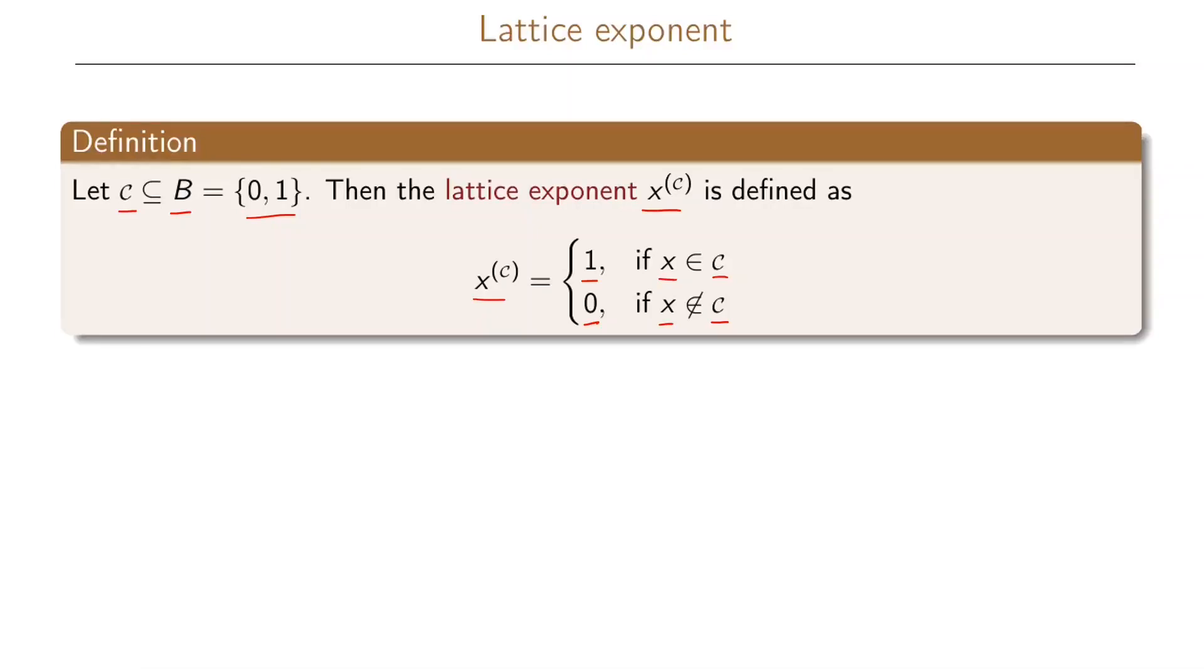In other words, if we have the lattice exponent x^{1} here, this will always be equal to the value of x, because if x is 0, 0 will not be in this set which consists of 1, but if x is 1, 1 will be in this set which consists of 1. So the lattice exponent x^{1} will always take the value of x.